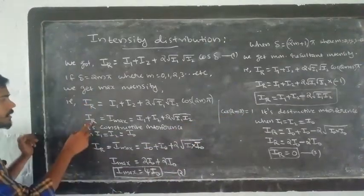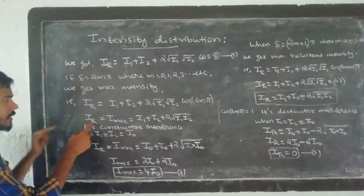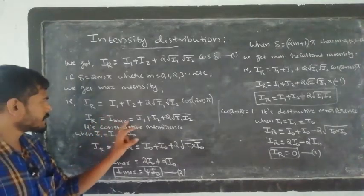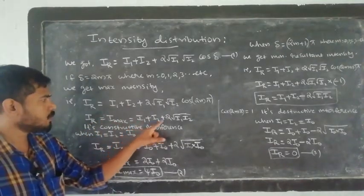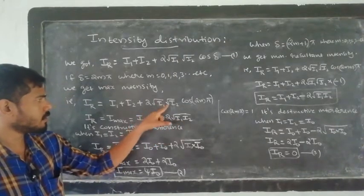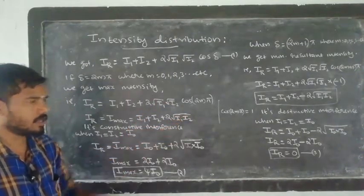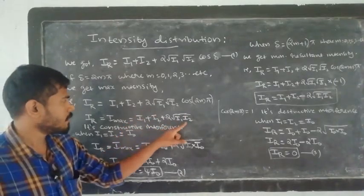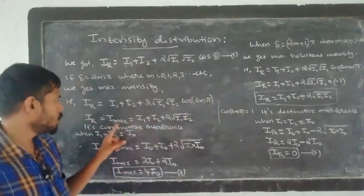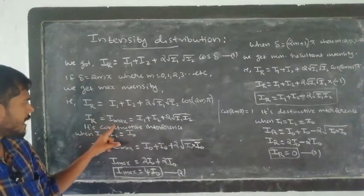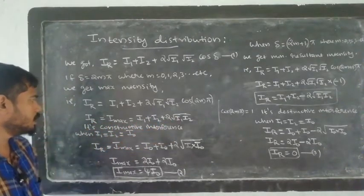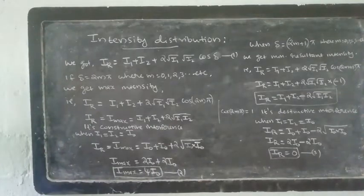Then the intensity of the resultant wave will be maximum. I_max is equal to i1 plus i2 plus 2√(i1·i2). This is constructive interference, where two coherent light waves are superimposed at maximum intensity.